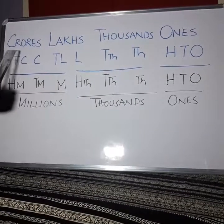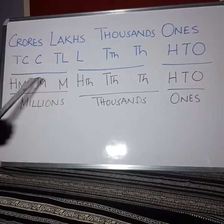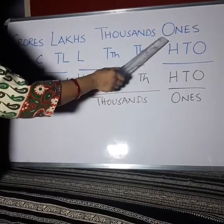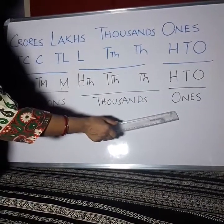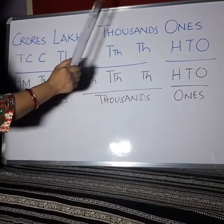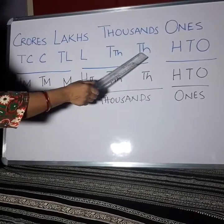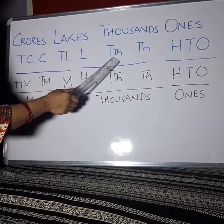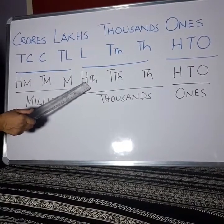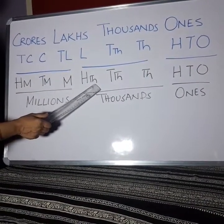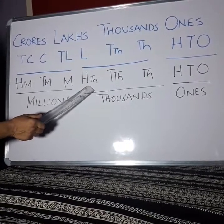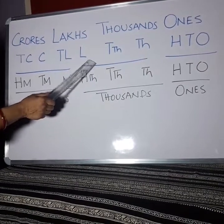Now we are comparing the places. In the Ones period, both the Indian and International systems are the same — three digits. But in the Thousands period, in the Indian System there are just two places, and in the International System there are three places. So just see: 100,000 in International is equal to 1,00,000 in Indian.